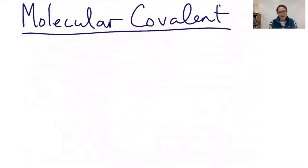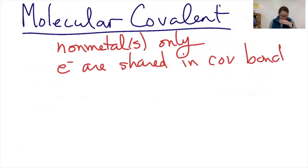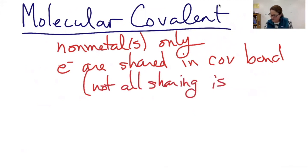The next one we want to talk about is molecular covalent. Molecular covalent is going to involve one or more non-metals only. In a covalent bond, electrons are shared in the covalent bond. And something that's going to be important to know as we go forward is not all sharing is equal, like sharing of most things. And when I say not all sharing is equal, different atoms might pull on atoms differently or on electrons differently.